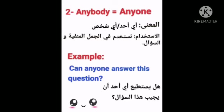Now let's look at anybody or anyone. Both have the same meaning — 'any person' or 'anyone.' When do we use them? We use anybody or anyone with negative sentences and questions. When you have a negative sentence or a question, you use anybody or anyone. Example: can anyone answer this question? Here we have a question, so we use anyone. Anybody or anyone is used in questions and negatives.